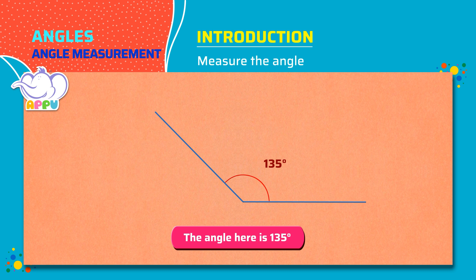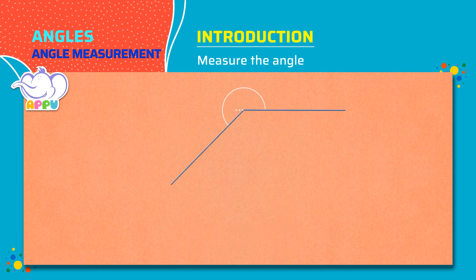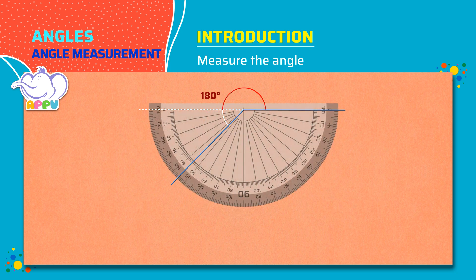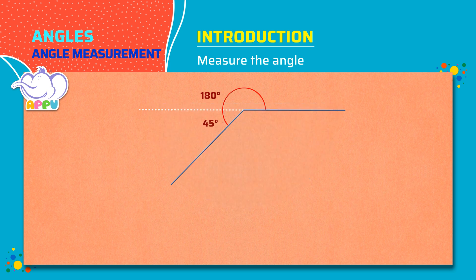Let's see another example. Here this angle is more than 180 degrees, so we turn the protractor and measure. The number on the protractor corresponds to 45 degrees. To get the angle, we add 180 plus 45 equals 225 degrees. So the angle here is 225 degrees.